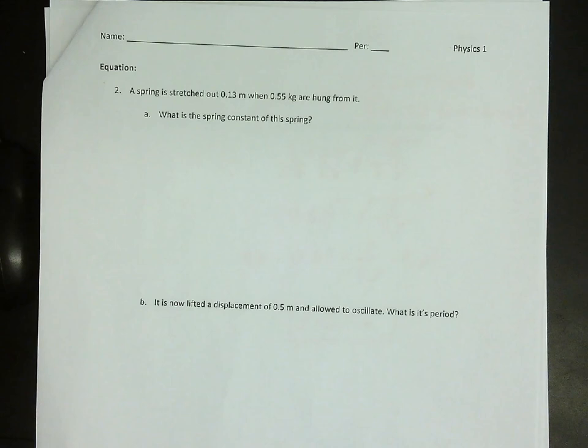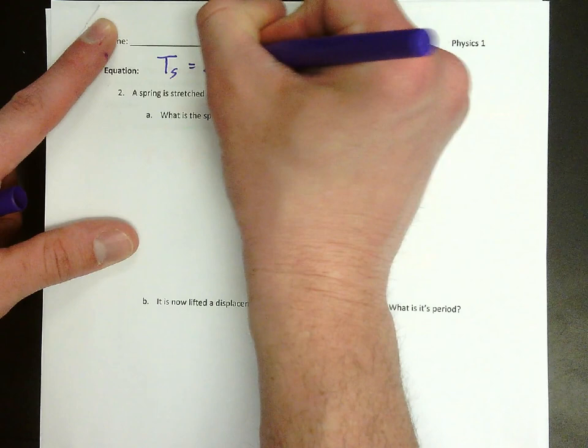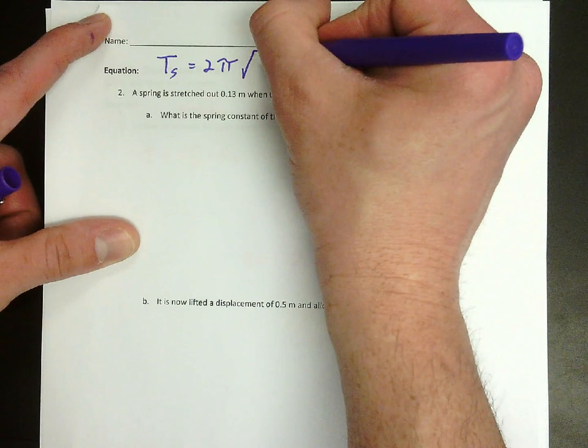The first equation is the period of a spring. So we're going to call this T_s equals 2π times the square root of M over K.